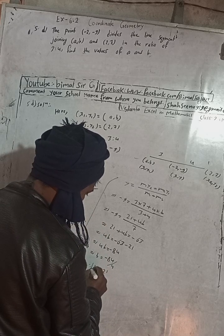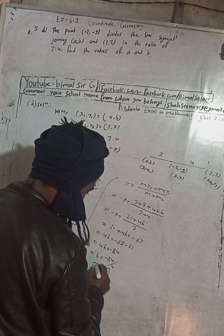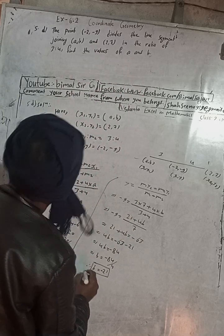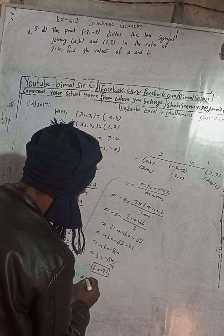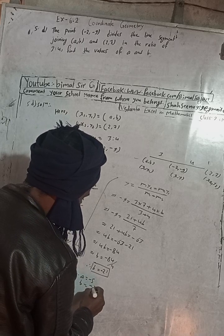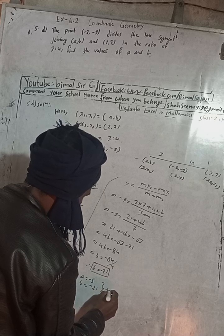Therefore, the values of a and b: a is equal to -5 and b is equal to -21. These two are the answer.